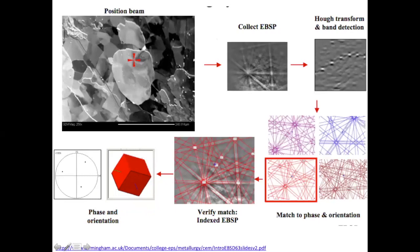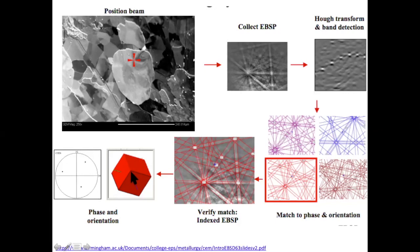This slide summarizes the computer data analysis: look at one pixel of raw data, convert it to points using Hough transformation, perform pattern matching based on the Hough output, overlay calculated Kikuchi lines on the experiment to visually verify the match, then extract crystal orientation. The pole figure tells us orientation — in this example it's very close to the [1,1,1] zone axis for this grain.